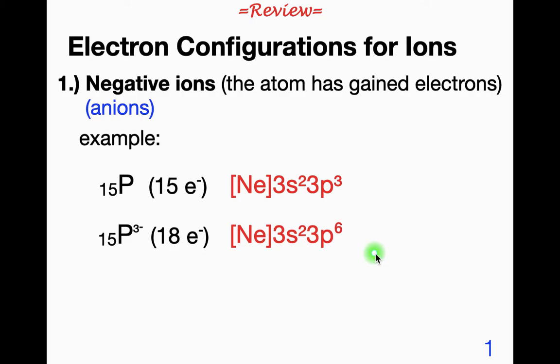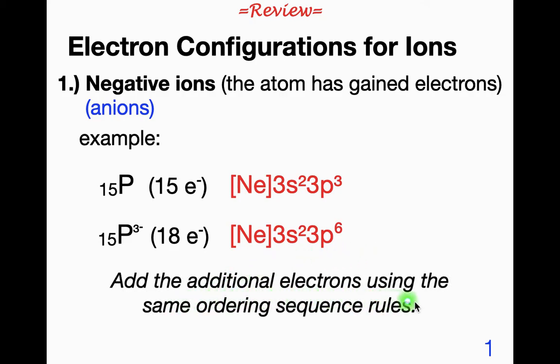Just that simple. Add the additional electrons using the same ordering sequence rules: the three rules we talked about, the Aufbau principle, Hund's rule, and the Pauli exclusion principle.